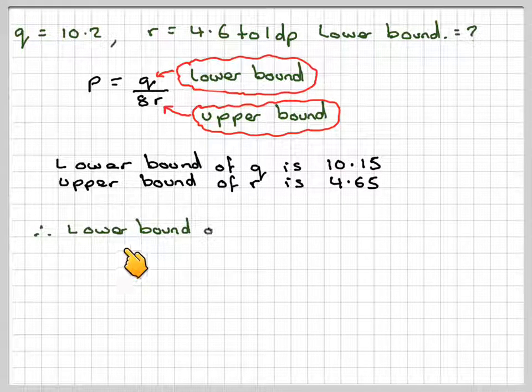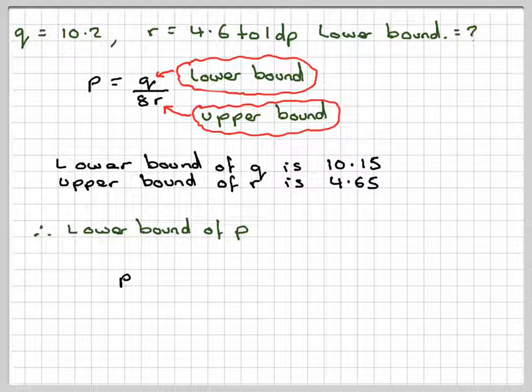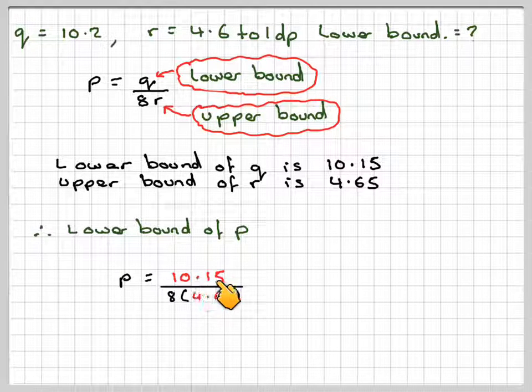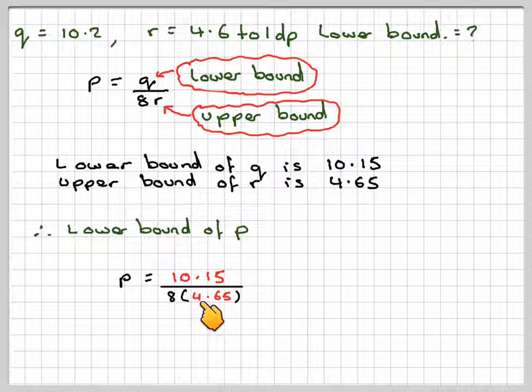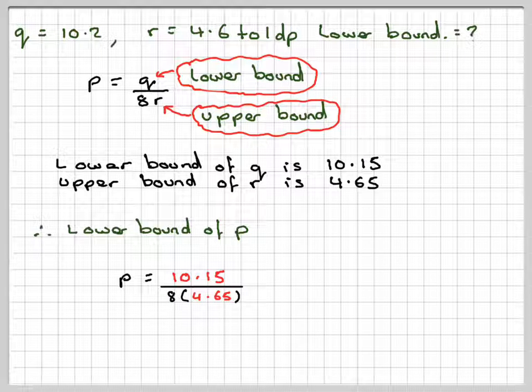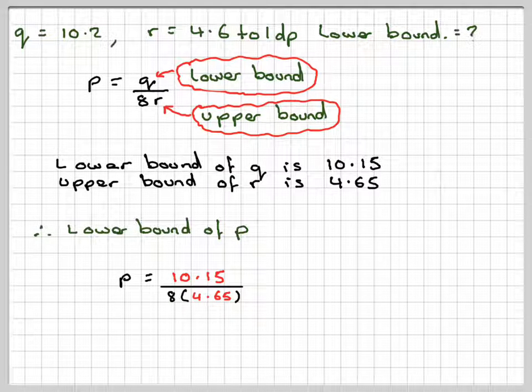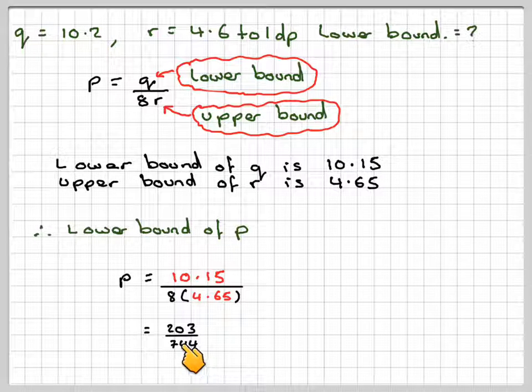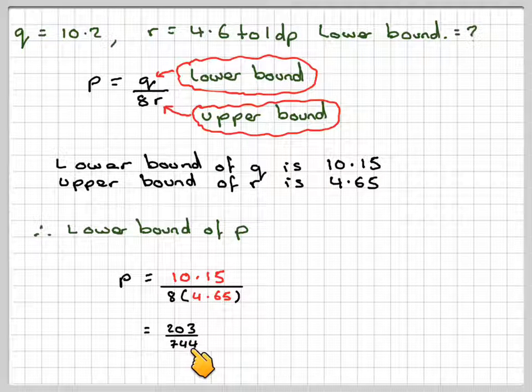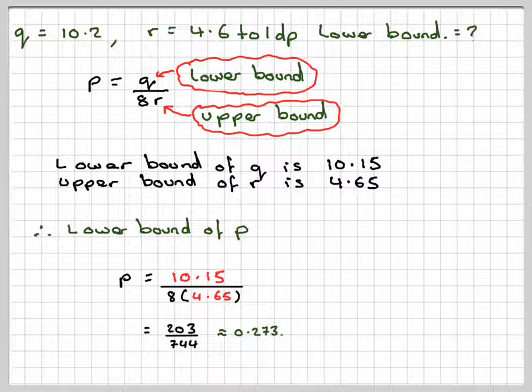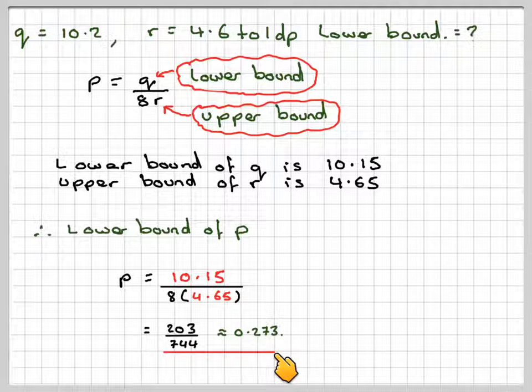Substituting those numbers in, the lower bound of P is 10.15 divided by 8 times 4.65. Do this on the calculator with your fraction button, and that gives 203 over 744, which is 0.273.